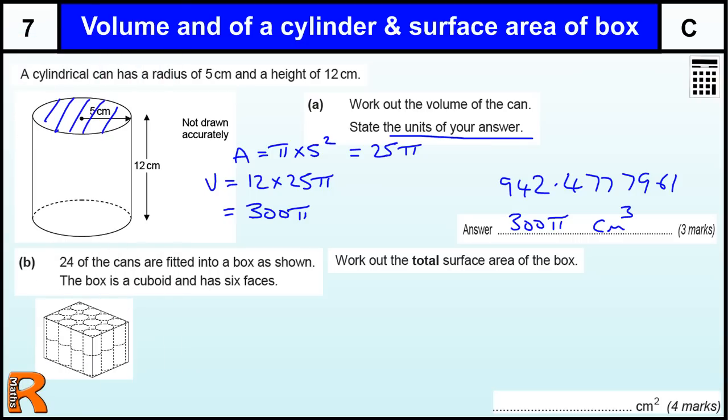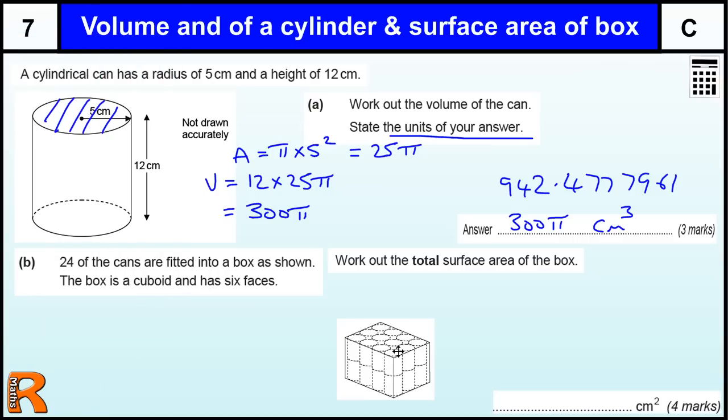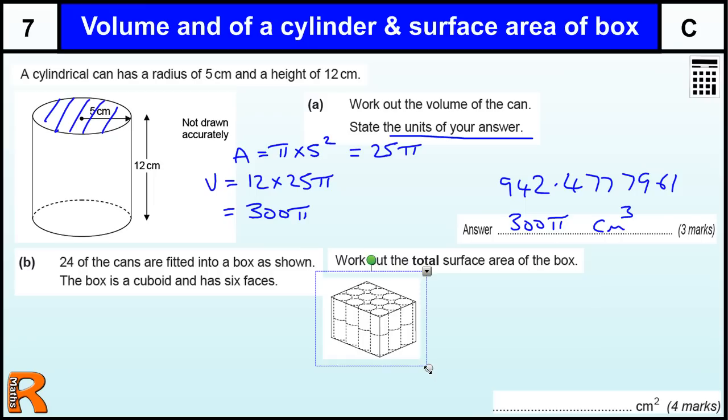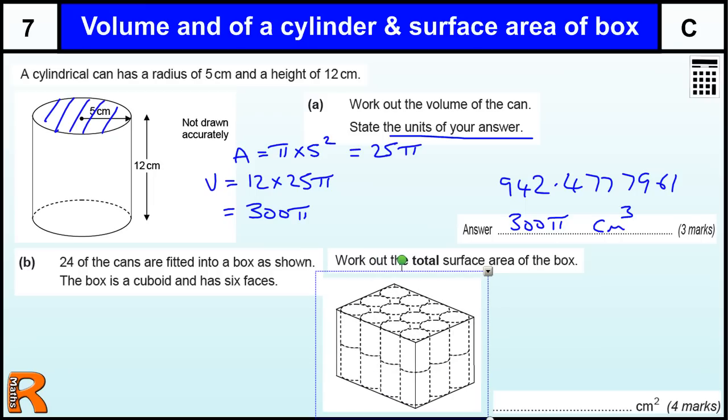Ok part b. Just going to zoom this in a little bit, so we have a bigger shape. 24 of these cans are fitted into a box as shown. The box is a cuboid and has six faces. So we want to work out the surface area of the box. We need to work out the area of each side. So the first thing we need to do is work out the lengths of the sides.